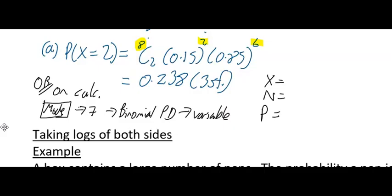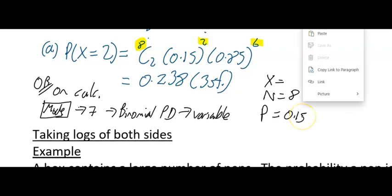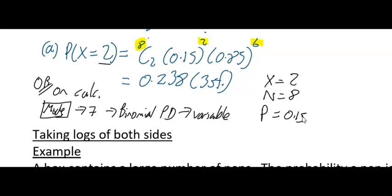Another way is using the calculator. Hit Mode then 7, go to Binomial PD, then Variable. You have three inputs: x, n, and p. Set x = 2, n = 8, p = 0.15, press equals. The answer is 0.2382, confirming our manual result.